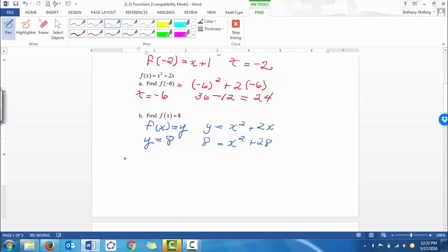And then we are going to solve. So we set it equal to 0. So x squared plus 2x minus 8. And then we need to factor.